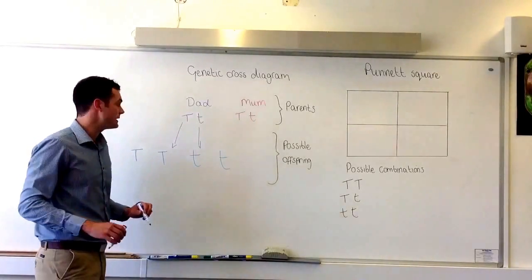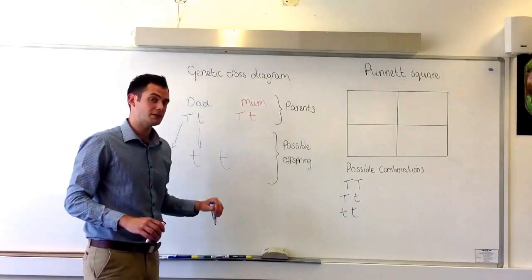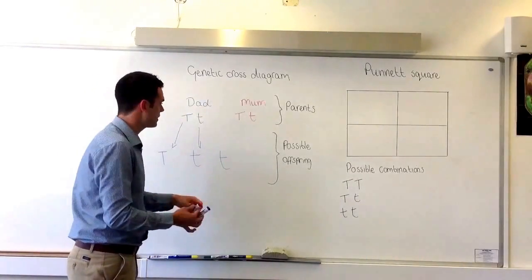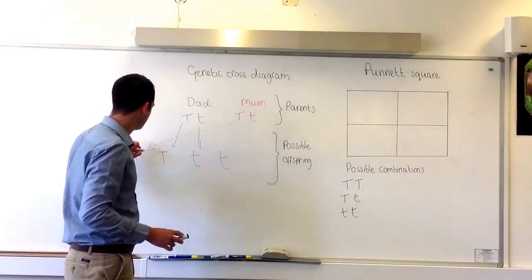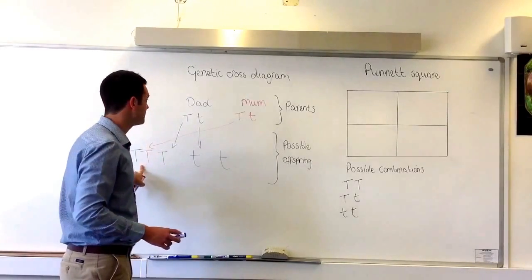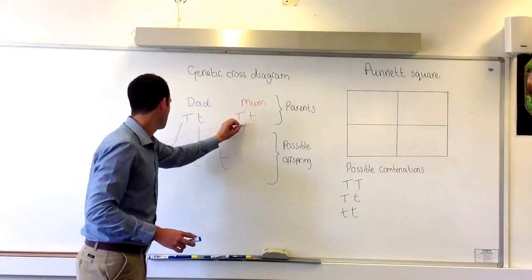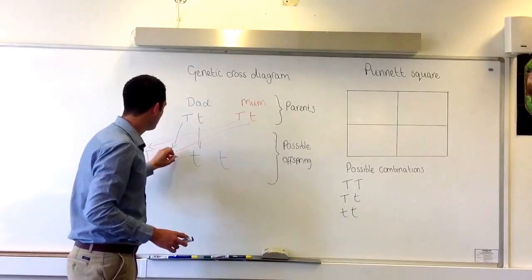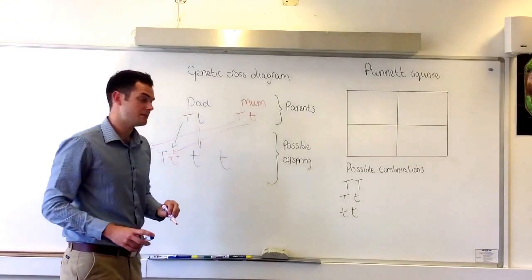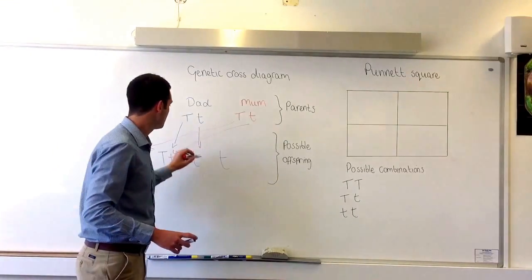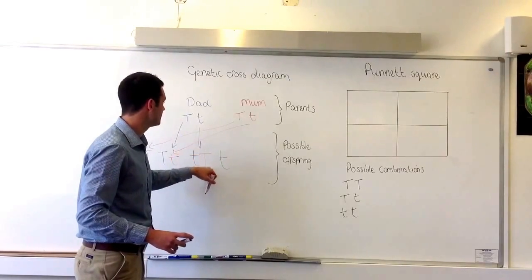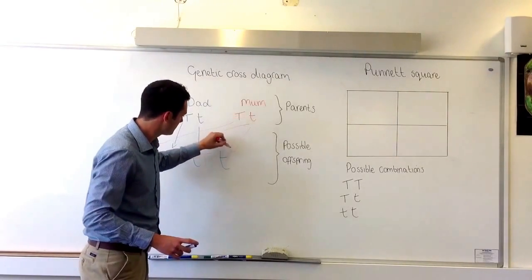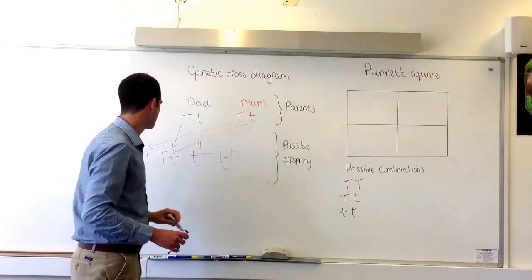All you need to do now is match up the mum's genes to the dad's genes. Over here you would have two dominant T's, then you would have one dominant T and one recessive t. Here you would have one recessive t and one dominant T, and here two recessive t's.